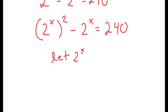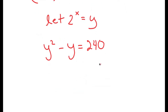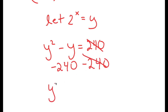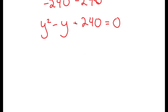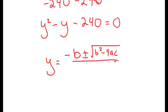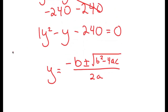Now I let 2 to the power of x equal variable y. Substituting, I get y squared minus y equals 240. Subtracting 240 from both sides gives y squared minus y minus 240 equals 0. This is a quadratic equation, and I can solve it using the quadratic formula: negative b plus or minus the square root of b squared minus 4ac, all over 2a. Here a equals 1, b equals negative 1, and c equals negative 240.